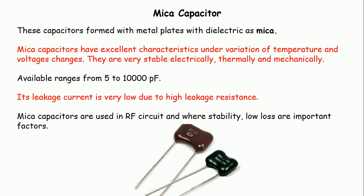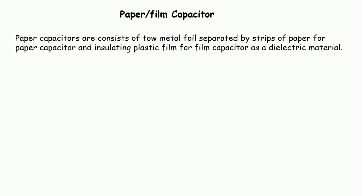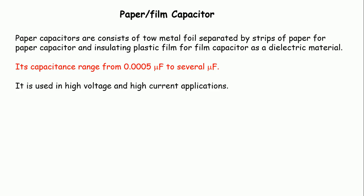This is what a typical mica capacitor looks like. Next are paper or film capacitors. Here, paper or film — meaning plastic film or some insulating film — is used as the dielectric material. They are formed with two metal foils and the dielectric material, either paper or film, placed inside. Where paper is used as the dielectric, the capacitor is called a paper capacitor, and where an insulating film is used, it is called a film capacitor. Its capacitance ranges from 0.0005 microfarad to several microfarads.